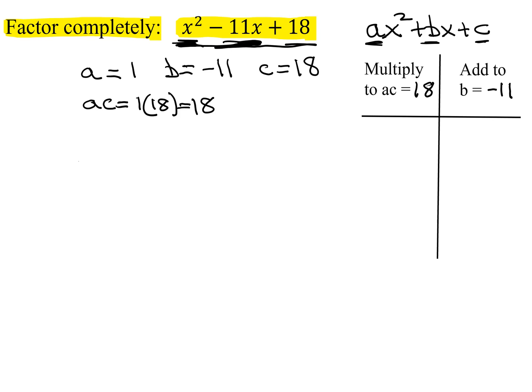Since they multiply to a positive number and add to a negative, that tells me both of my numbers have to be negative. And what I always do is I just start out with negative 18 and negative 1. That means I start out with my basic number 18 and 1. I need them both to be negative in this case.